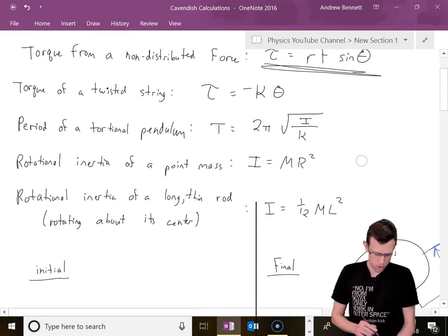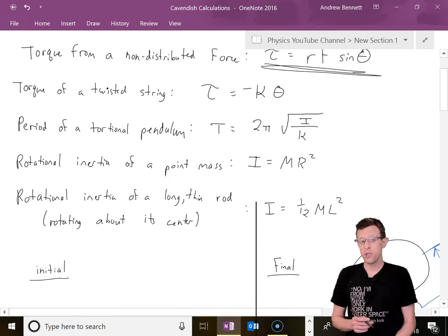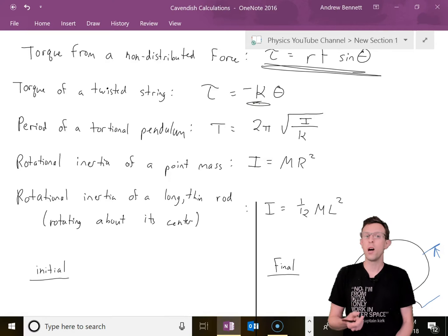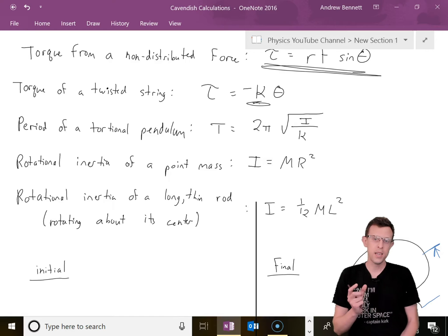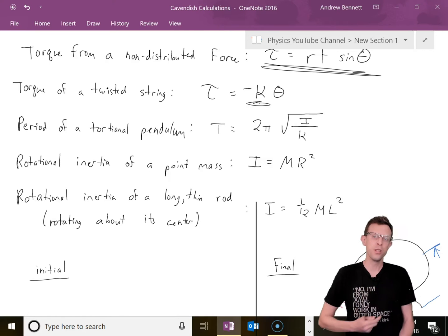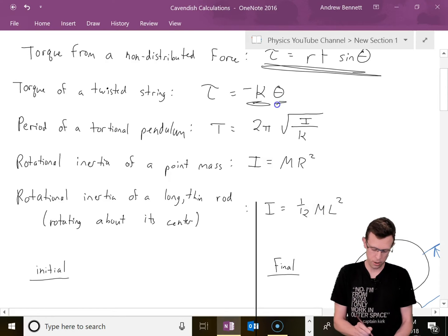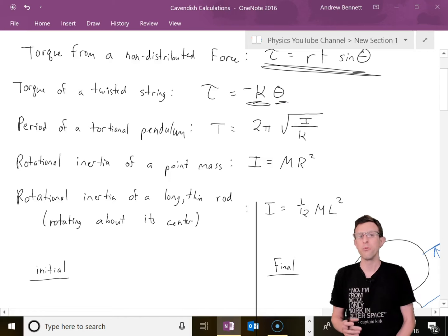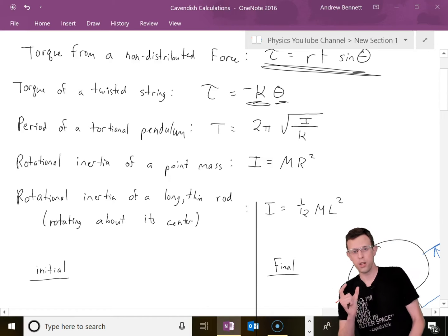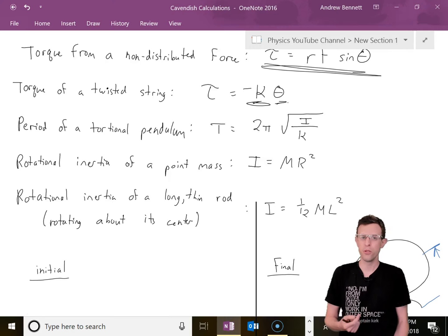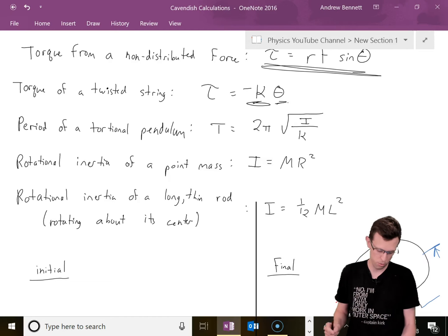Next up, we've got torque caused by twisting a string or a wire. There's this constant kappa that represents how hard it is to twist the wire, how much torque that wire will apply per unit of rotation. If we double how far it's been twisted, we should see double the torque trying to twist it back.